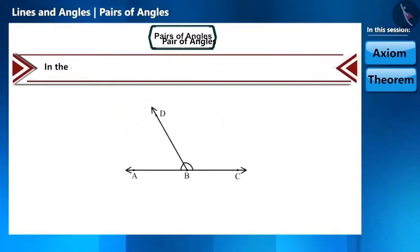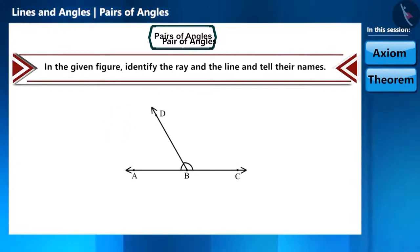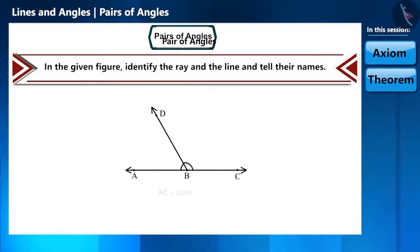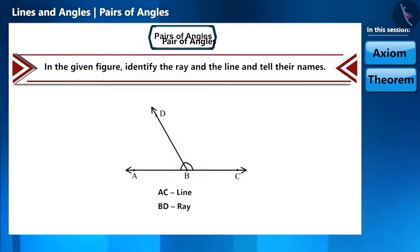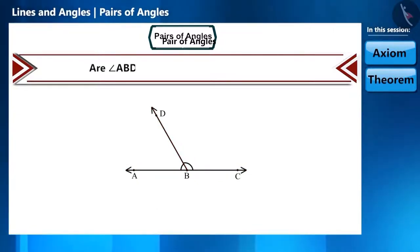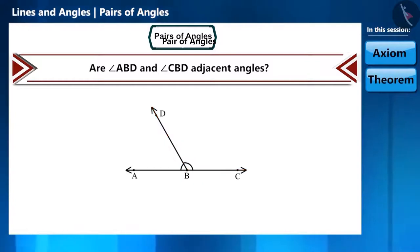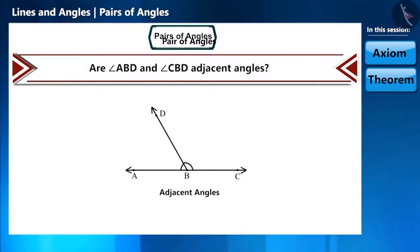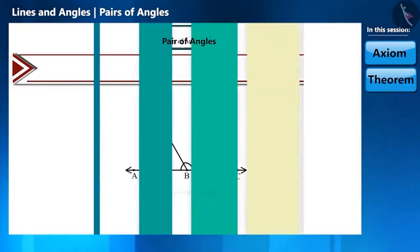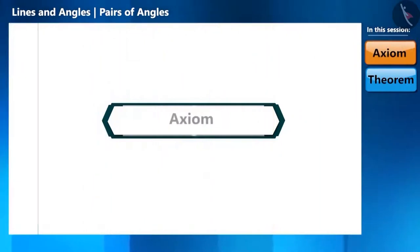In the given figure, identify the ray and the line and tell their names. Here, AC is a line and BD is a ray. Friends, are angles ABD and CBD adjacent angles? Yes, we have understood this figure well. Now let's move ahead and discuss an axiom related to it.